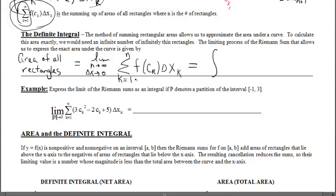Over the years this notation evolved into the integral. The integral symbol means a summing — it takes the place of sigma. The lower limit k equals 1 was replaced with a, our beginning x value, and the upper limit n was replaced with b, our ending x value. C-sub-k evolved into f of x, and delta-x-sub-k evolved into the differential dx. This is just the evolution of the notation.